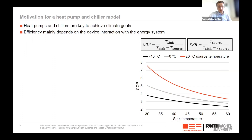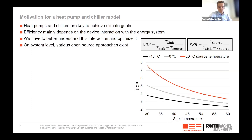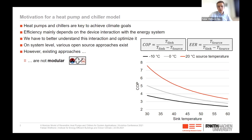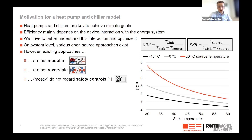As this interaction is so important, we have to better understand and optimize it, for example by design optimization or control design optimizations. To do this, we need modeling approaches. On the system level, various open source approaches already exist. However, these existing approaches are not modular and not reversible, and mostly they do not regard any safety controls.